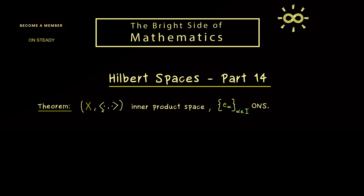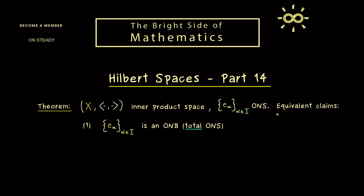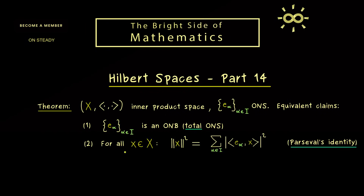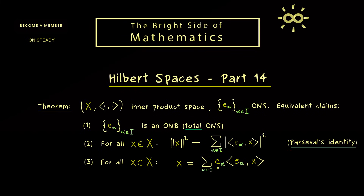Ok, then without further ado, let's recall the statement from the last video, where we have an inner product space X and an orthonormal system e_alpha. We get four claims which are all equivalent. The first one says we have a total ONS, so actually an ONB. The second one is Parseval's identity, which is simply Bessel's inequality with equality. And then the third one tells us that every vector x in X can be expanded with respect to the ONS.